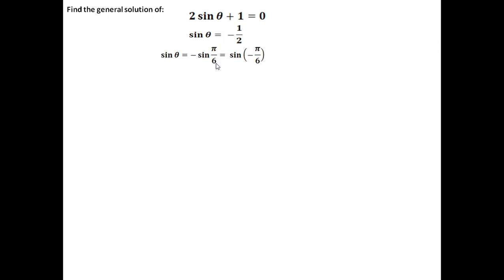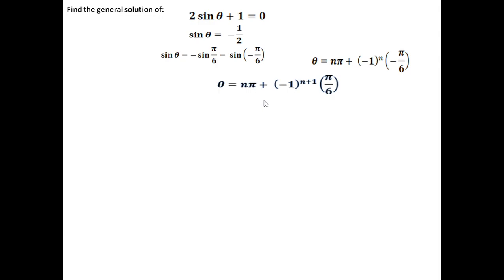Let us do an example: find the general solution of 2 sin θ + 1 = 0. This equation can be rewritten as sin θ = −1/2. Now sin θ = −1/2 means −sin(π/6), since sin 30° = 1/2. And −sin(π/6) = sin(−π/6). So sin θ = sin(−π/6) is now in the sin θ = sin x form. Therefore the general solution is θ = nπ + (−1)ⁿ · (−π/6), which simplifies to θ = nπ + (−1)^(n+1) · π/6.